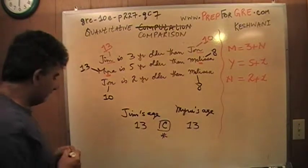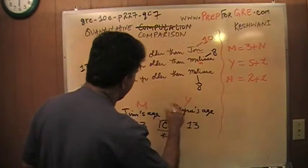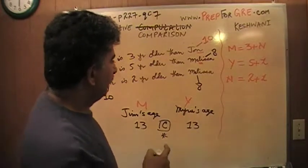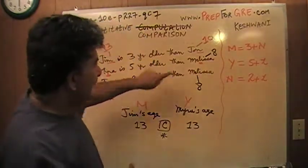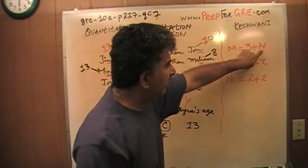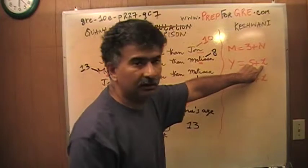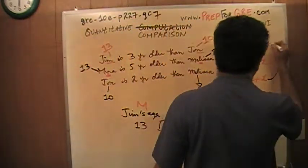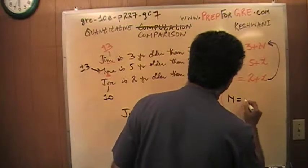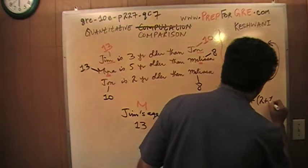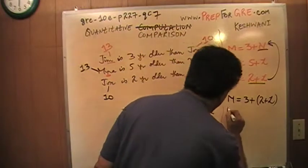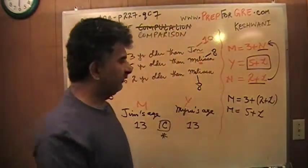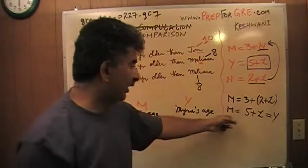And since I'm asked to compare Jim's age, which is M, versus Myra's age which is Y, that's what I have to compare, M and Y. The very first thing you should notice is that since I'm asked to compare Jim's age which is M and Myra's age which is Y, Jim's age involves N. If I can somehow get rid of this N and express this N in terms of L, I'm all set, which is exactly what we're going to do. So I'm going to use this equation, third equation, and put it in the first equation. Substitute the third equation into the first equation, and that gives me M equals three plus two plus L. See, it is two plus L for N, which means M equals five plus L, which is exactly the exact same thing as Myra's age, five plus L. There you go. Therefore M equals Y, as we found here.